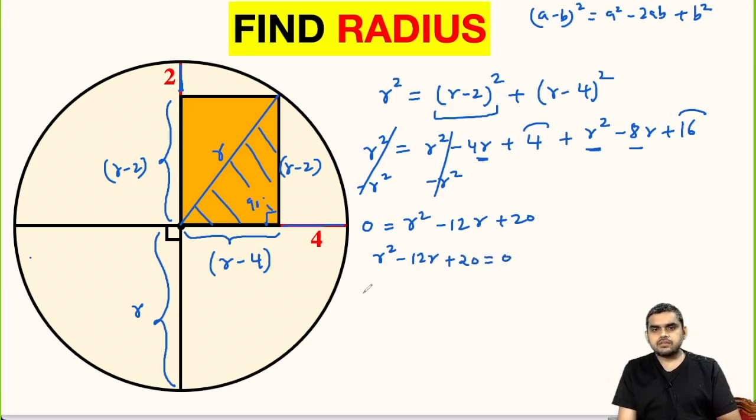We will use the factorization technique to factor out this. This will be r square minus 10r minus 2r plus 20 equal to 0. Taking out r common, this will be r minus 10. 2 taken out common, so it will be r minus 10 inside.